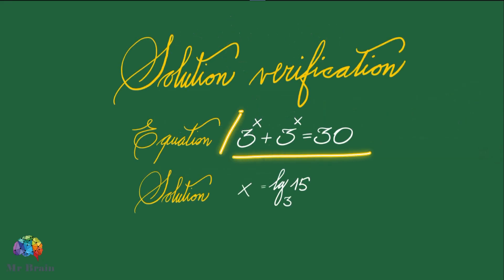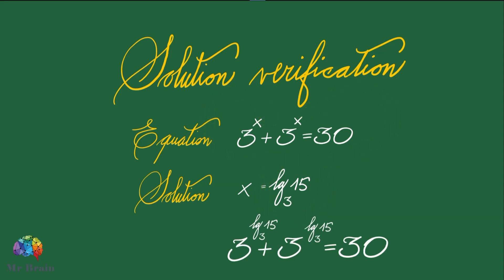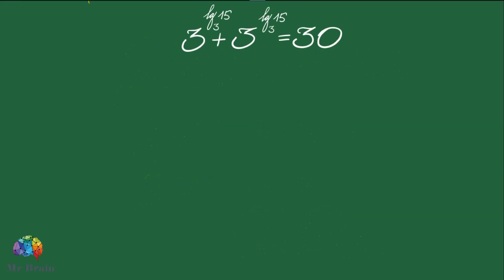Let's now verify the correctness of the solution. Let's assign the value log base 3 of 15 to the x in the equation. We apply the properties of logarithms and write 3 to the power of logarithm base 3 of 15 equals 15.